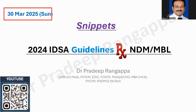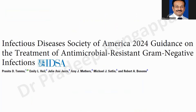As part of this snippet series, I'll be covering the 2024 IDSA guidelines for NDM or MBL — metallo-beta-lactamases, or NDM, notoriously called New Delhi metallo-beta-lactamase. These are commonly enzyme-producing CREs we see in the ICU. There is a de-emphasis on polymyxin or colistin combinations in the new guidelines. It is good to refer to this 2024 document to exercise proper antibiotic stewardship in our practice.